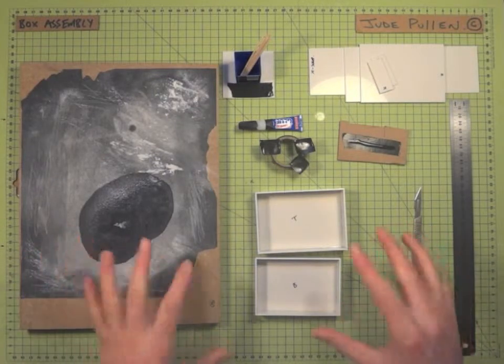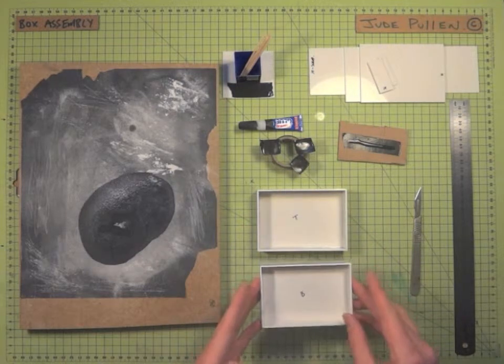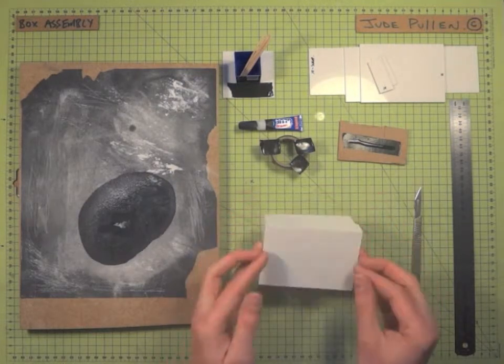So a quick update on some of the tricks of putting the box assembly together. Now that I've got the base and the top and checked that the two go together, that seems pretty good.